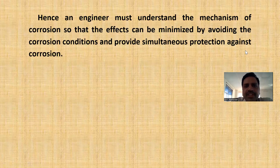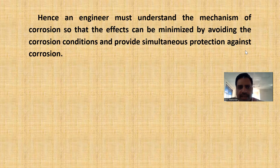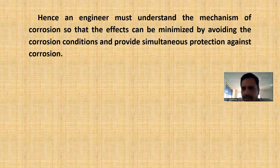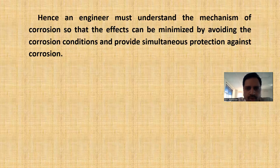Hence, an engineer must understand the mechanism of corrosion so that the effects can be minimized by avoiding the corrosion conditions and providing simultaneous protection against corrosion. We have to minimize the rate of corrosion. To do so, we have to know the mechanism of corrosion — how the corrosion process takes place. Once we know the mechanism, we can see alternate routes so that the metal will not undergo corrosion.